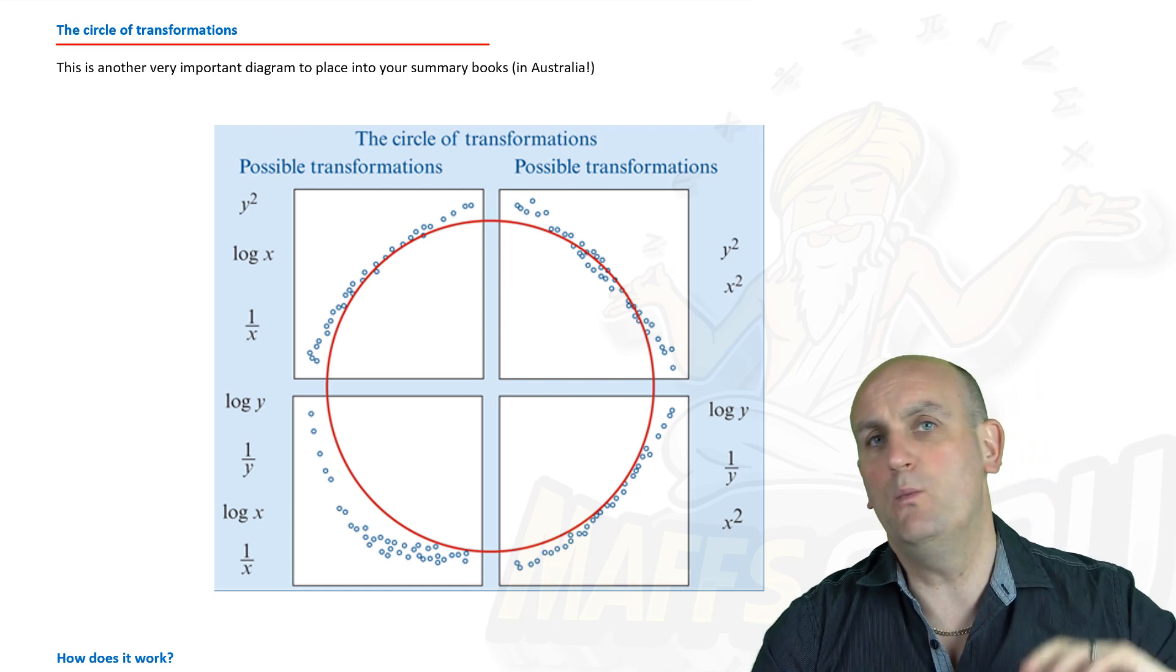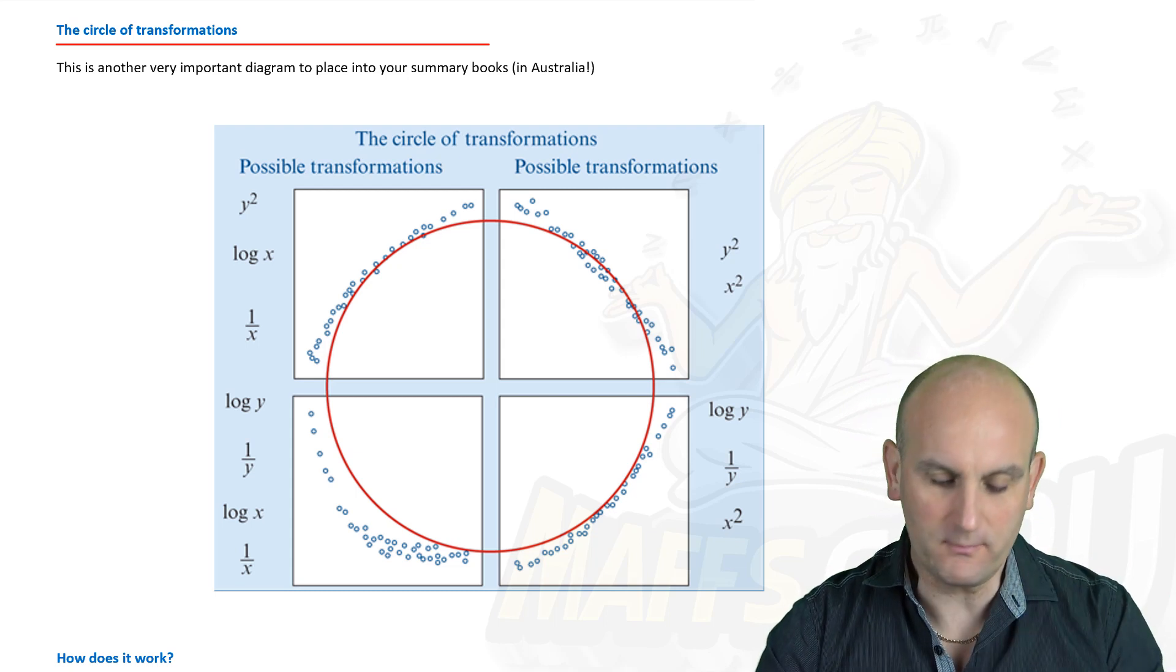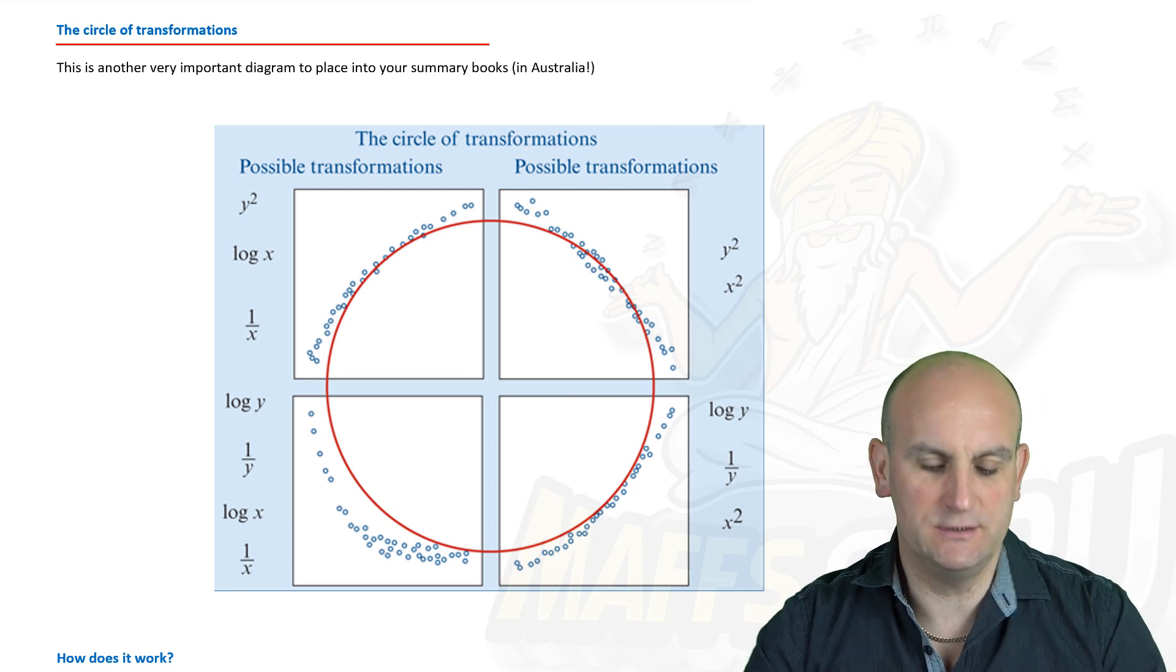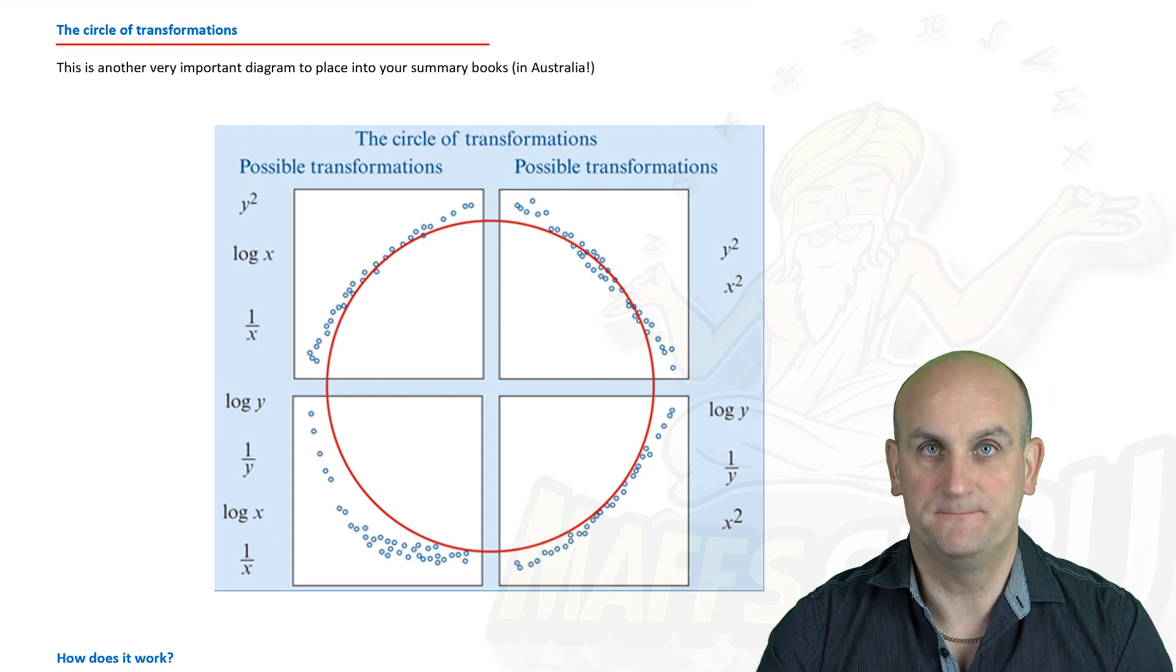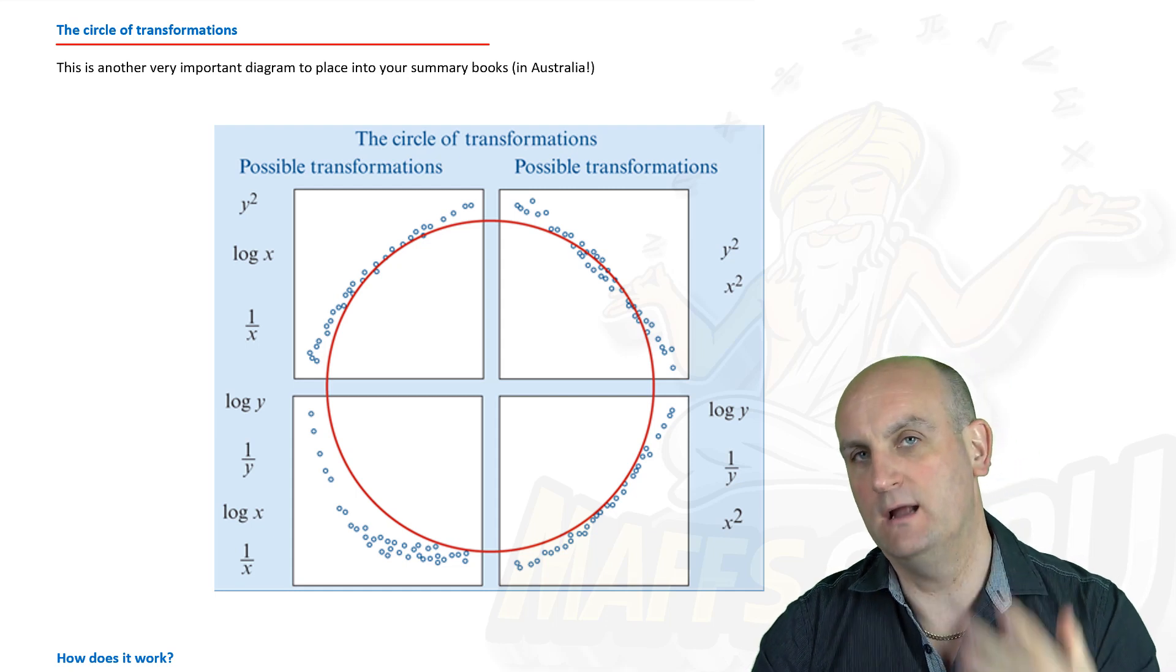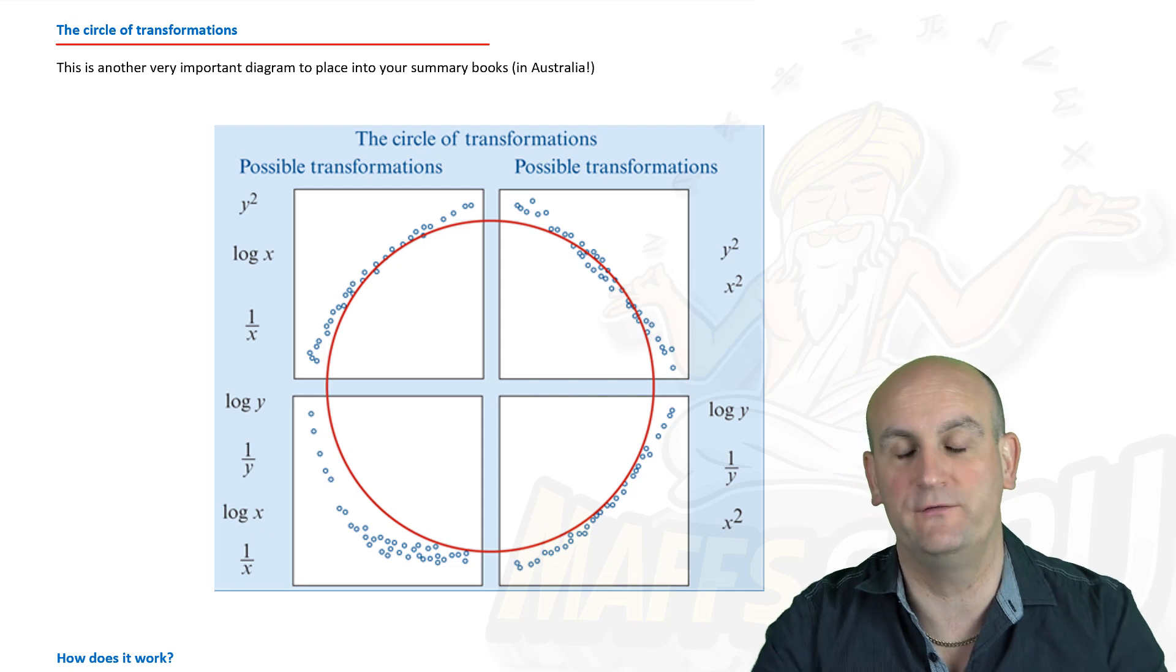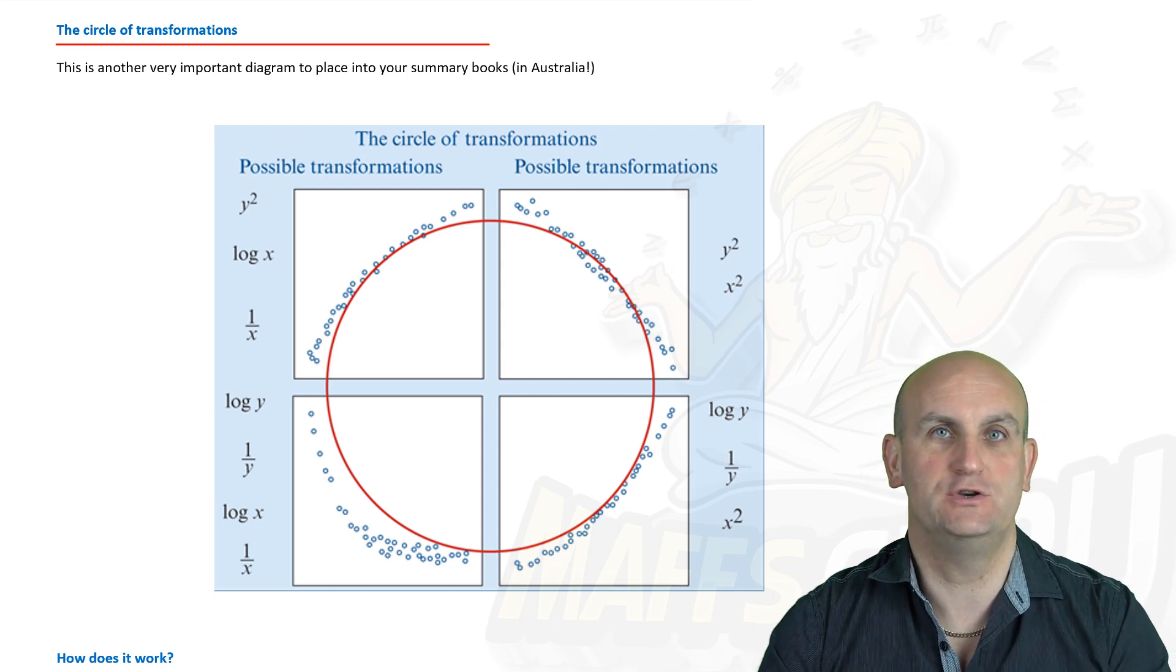Now building on what we had before we already know about scatter plots, we know about regression lines. This is just a table, stick it out, put it in your summary book, do what you need to do that says well if we have a certain amount of data, if we have data going a certain sort of pattern or a direction then we can use a number of transforms to turn it straight. Now the good news is or maybe the bad news for you guys is there's not just one transform there are a number to choose from.